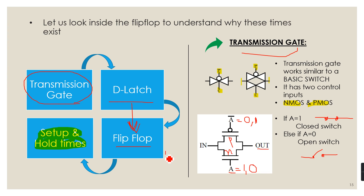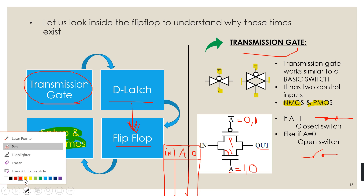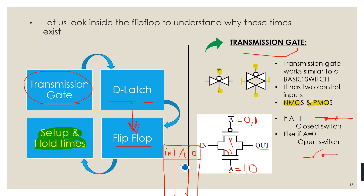So if the control input A is given 0, both are off and the output remains at high impedance irrespective of the input. If the control input is given 1, both are on and the output follows the input. But the input does not follow just any path — the input could be either 0 or 1, and each value takes a specific path.